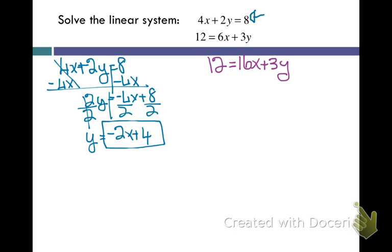I'm going to use it by putting it into my other equation. So that is going to give me 12 equals 6x plus 3 times the expression, which is y, negative 2x plus 4.